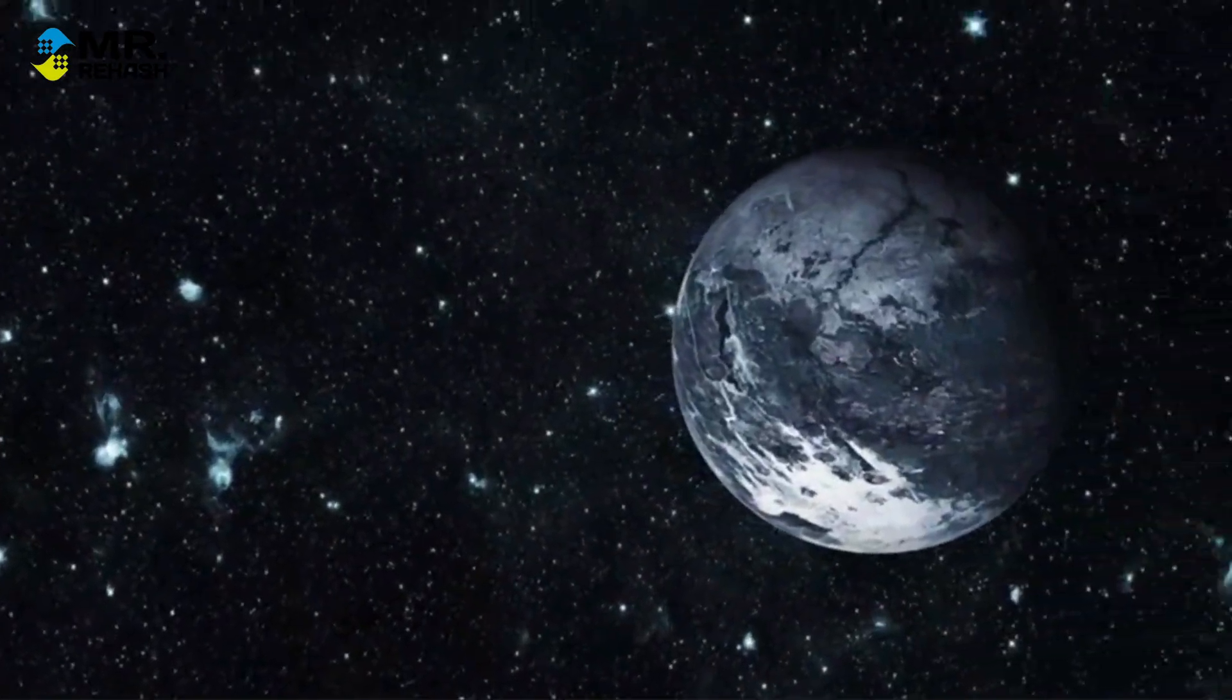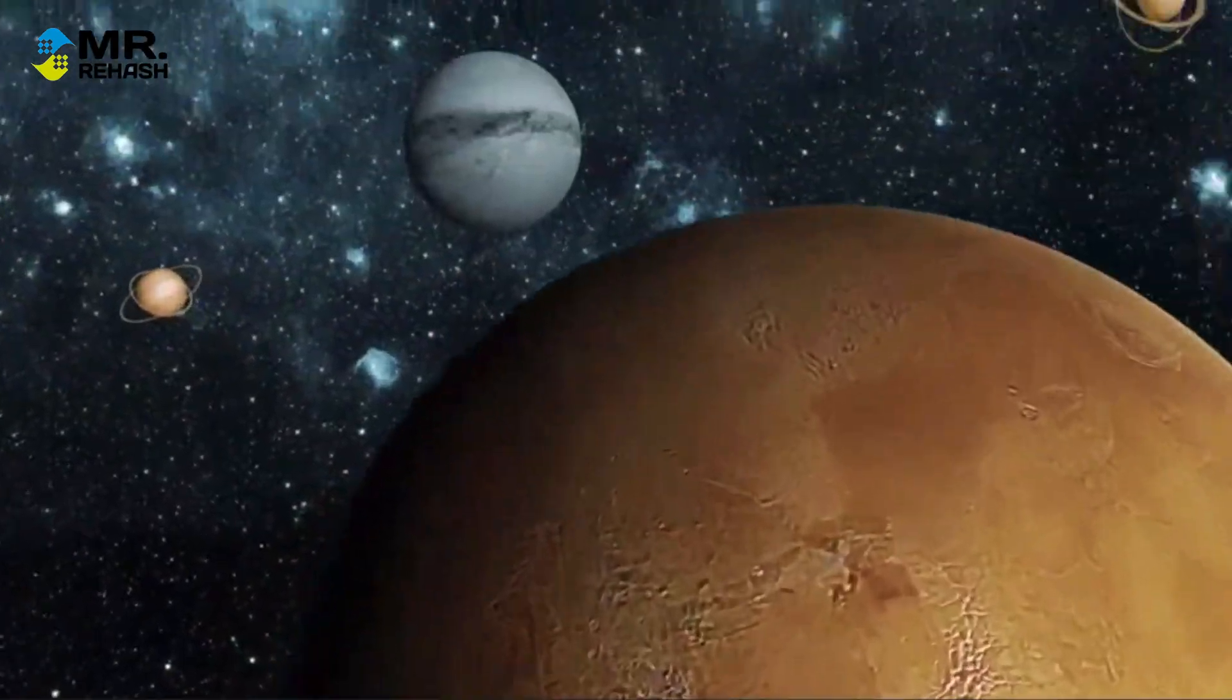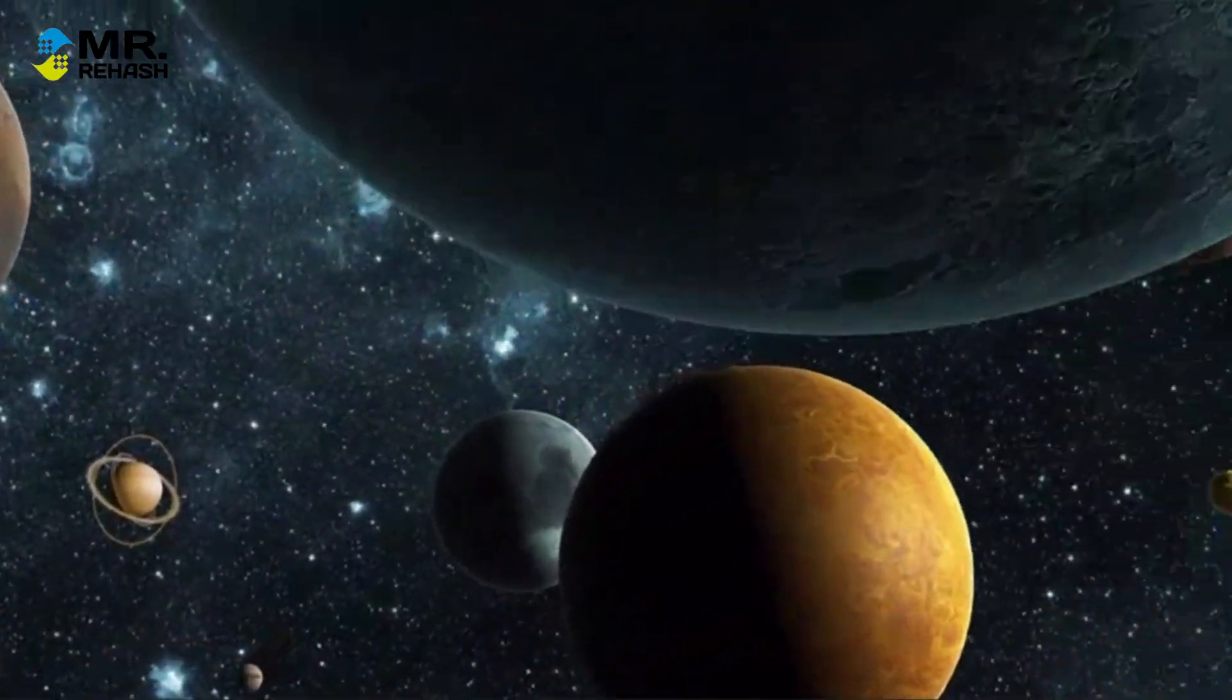Now, moving beyond the inner planets, we have the outer planets, including Jupiter, Saturn, Uranus, and Neptune. These planets are much farther from Earth and, therefore, appear even dimmer in our night sky.